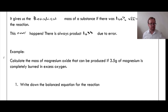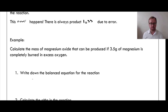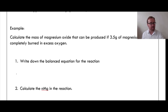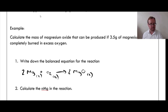So an example — calculate the mass of magnesium oxide that can be produced if 3.50 grams of magnesium is completely burned in excess oxygen. First, write down the balanced equation. The equation needs balancing: we need 2Mg and 2MgO. That gives two atoms of magnesium on each side and two oxygen atoms on each side.